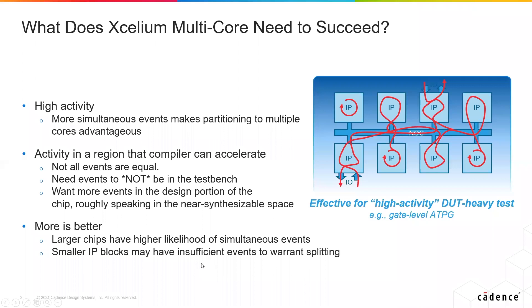First, let's look at what Accelium multi-core needs from a SystemVerilog simulation in order to succeed. Accelium multi-core needs two things to succeed: high activity, and that activity must be on SystemVerilog that can be accelerated. High activity is defined as having many simulation events to process in a single time slice — meaning most, if not all, of the design regions are active, changing, toggling, and requiring calculations to determine the next state.